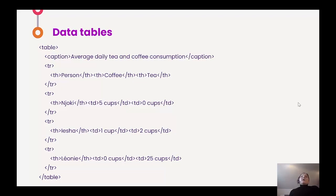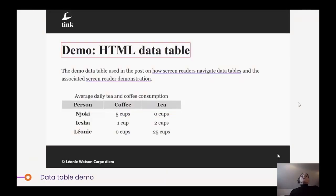Let's look at a little more complex example now — a data table showing some different people and the numbers of cups of tea and coffee that they might drink in a day. We've got a table element that has an implicit role of table. We have a caption element that gives the table its accessible name, describing what the table is for. And then we have TR and TD elements to make up the body of the table, the rows and the columns. Finally, we mark up the column headers using the TH element. These are really important when it comes to screen reader accessibility. I can best show you how this works through a demo — so what I'm going to play now is a video of a screen reader user navigating through this table. Listen very carefully because you will hear a lot of information.